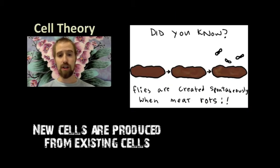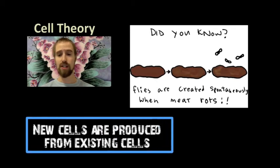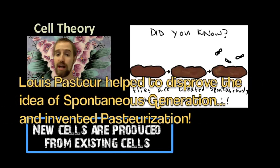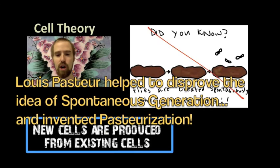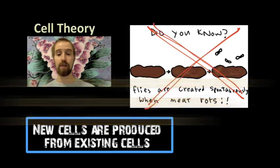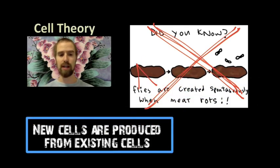Cell theory also tells us that new cells are produced from existing cells. Before the microscope was invented, there was this idea called spontaneous generation that said that some organisms spontaneously generated or suddenly appeared out of nowhere if the conditions were right. For example, if you left meat out on the counter, maggots would suddenly appear out of nowhere several days later. If you left bread out, mold would suddenly appear.